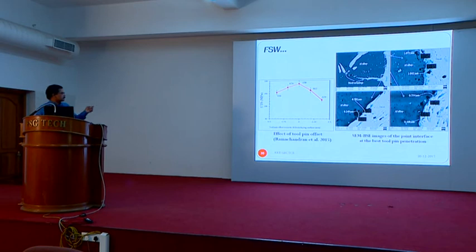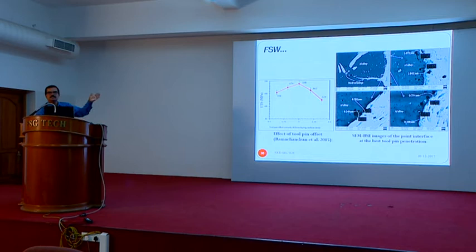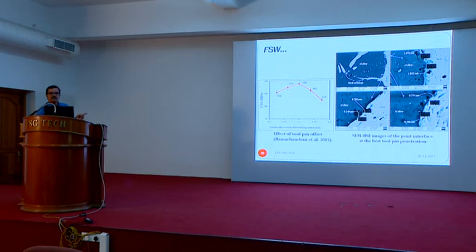The results for that particular pin: starting from zero offset (completely in aluminum) and moving to 0.5 mm offset, we got 188 MPa — around 90-91% of the tensile strength of the aluminum base metal. With 2 mm tool axis offset, the strength was still high, but with further increase in penetration there was a drastic decrease. After 1.5 mm offset, strength came to nearly zero. Unless we control the penetration of the tool pin into the steel side, we cannot get a good joint.